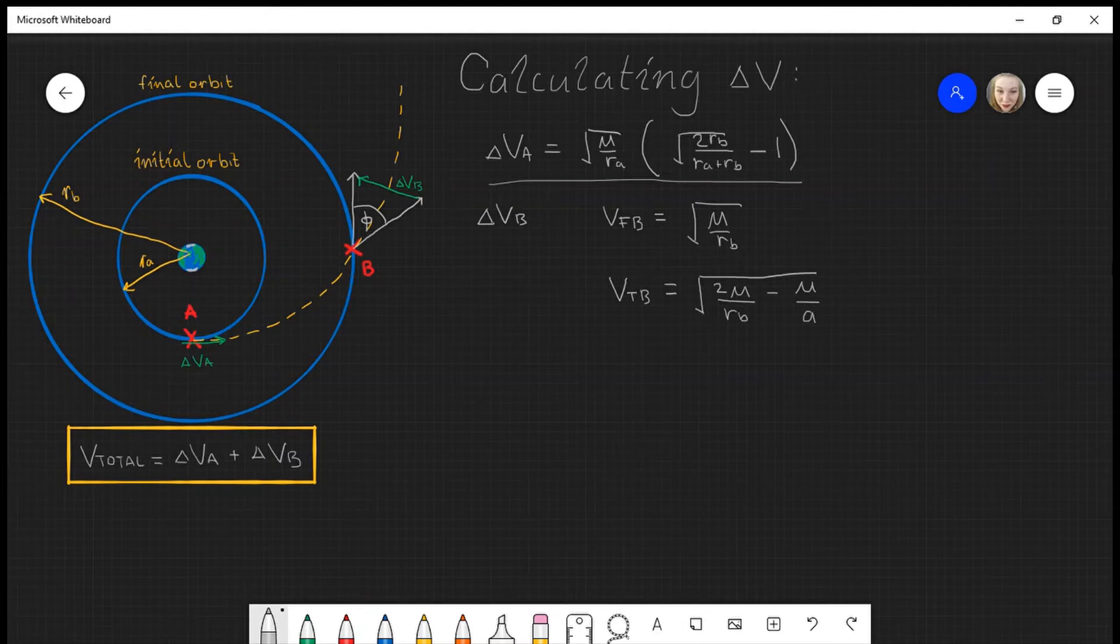Now however, because delta V isn't just magnitude but directional as well, we need to add the directional component. Looking at the diagram, I can label the tangent to the circle as V_FB and the tangent to the ellipse as V_TB.